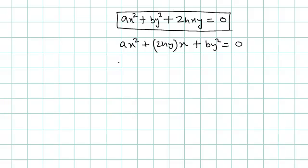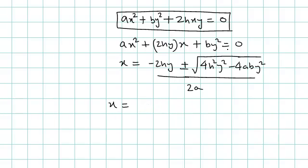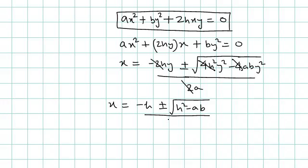We solve this quadratic using the quadratic formula: x = [−2hy ± √(4h²y² − 4aby²)] / 2a. Simplifying by cancelling the 4 and the 2s, and taking y common from under the square root, we get x = [−hy ± y√(h² − ab)] / a, which gives x = y · [−h ± √(h² − ab)] / a.